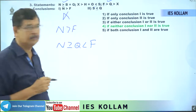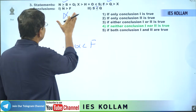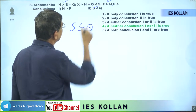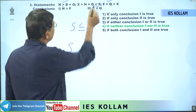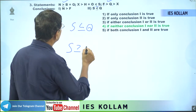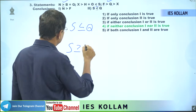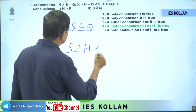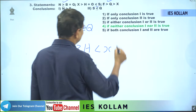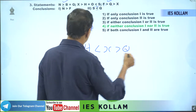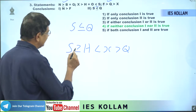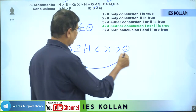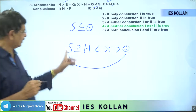Therefore, conclusion one is wrong. We can take the second conclusion and try to check: s less than or equal to q. s is having this second statement: s greater than or equal to o, and instead of o we can take h. This h is less than x, and x is greater than q. That is the way s and q would connect — but s greater than or equal to x means there is no direct connection here.